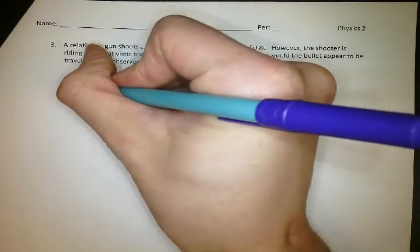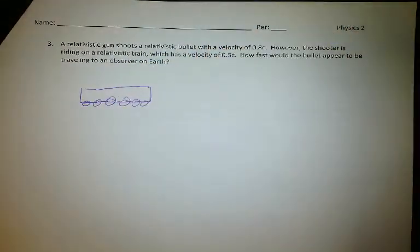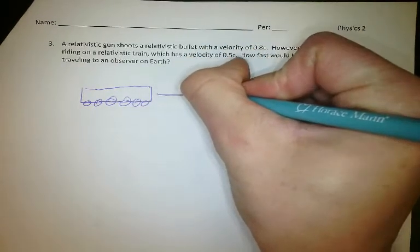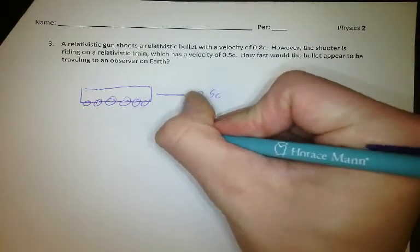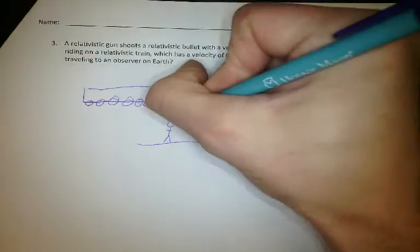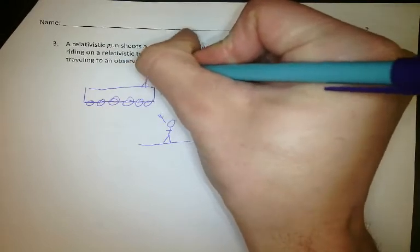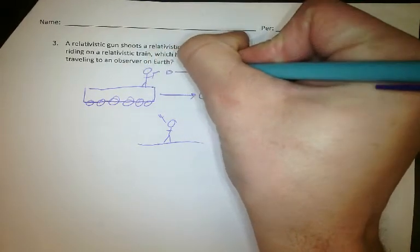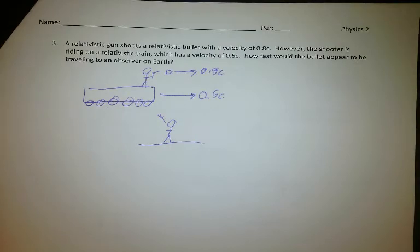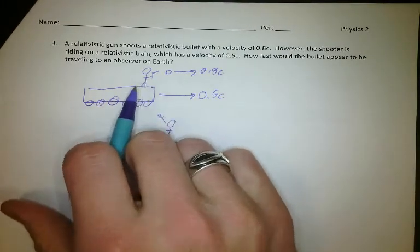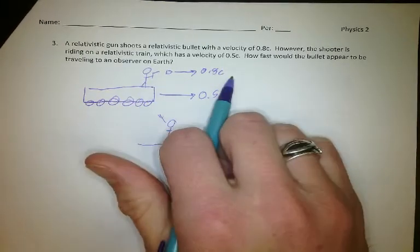I like to draw diagrams for these ones. So here's my train. The train is traveling with a velocity of 0.5c as observed by a person on Earth. I'm standing on the train and fire a bullet out of the gun. That bullet has a velocity of 0.8c. That's measured with respect to me being at rest. Even though I'm on a train traveling, I don't notice that — I just notice me being at rest and the forward motion.